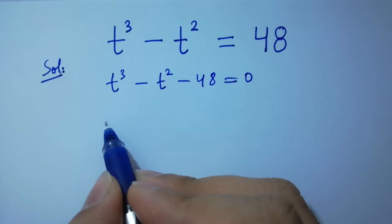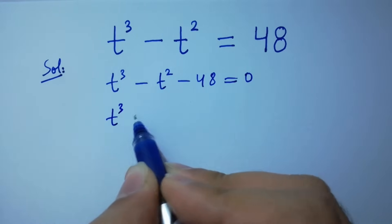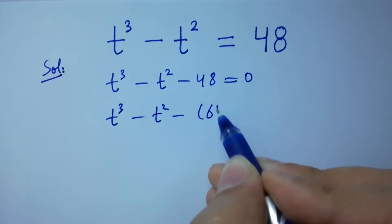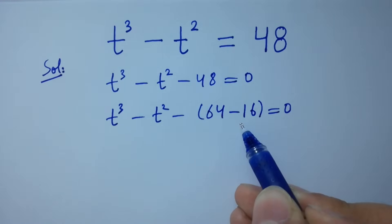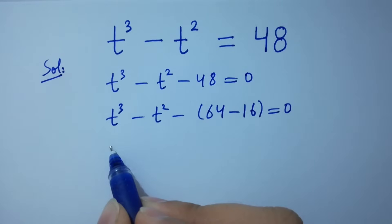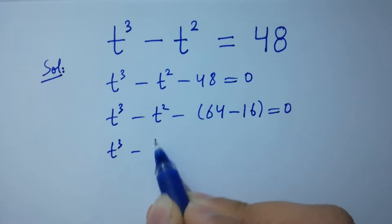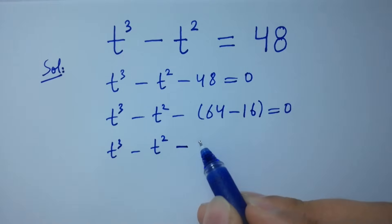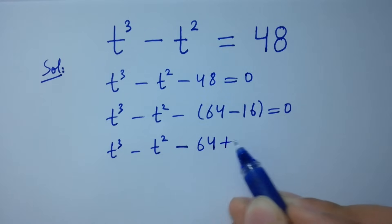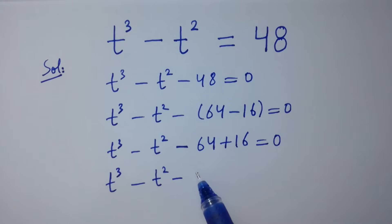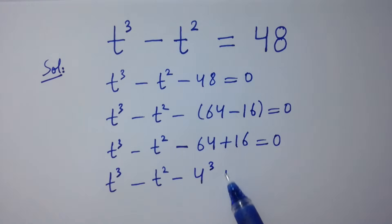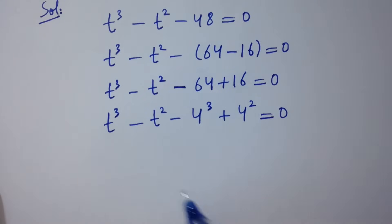This is the same as t cubed minus t squared minus 64 plus 16 equals zero, since 64 minus 16 is 48. Simplifying: t cubed minus t squared minus 64 plus 16 equals zero. Here, 64 is 4 cubed and 16 is 4 squared.